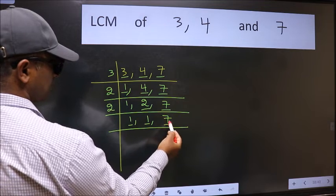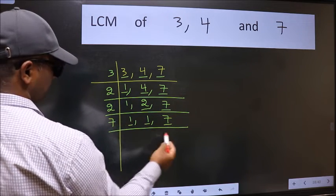So focus on the next number 7. 7 is a prime number, so 7 goes into 7 once.